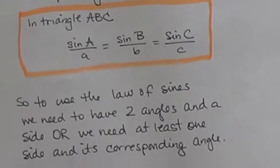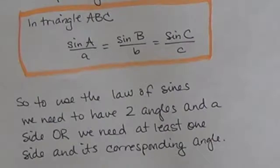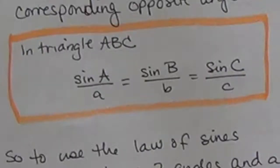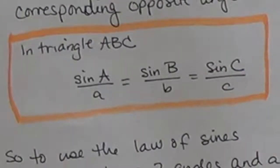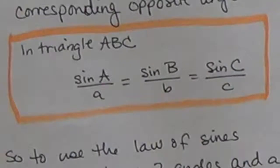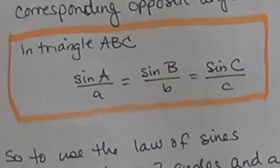To use the law of sines, we need to have two angles and a side, or we need to have at least one side and its corresponding angle. If I look at any pair — say sine of A over a equaling sine of B over b — if I know the two angles, then I have to know one of the two sides. Or I need to have two sides and at least one of the corresponding angles, such as knowing A, B, and sine of A.